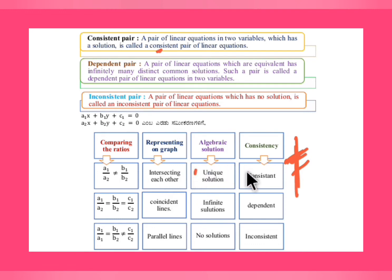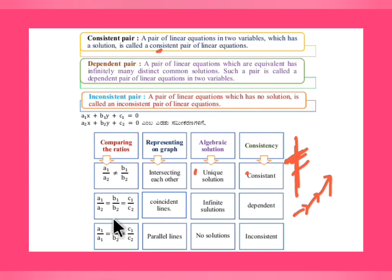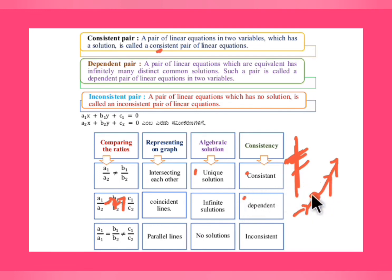They are consistent and have a unique solution. If a1/a2 = b1/b2 = c1/c2, then the lines are coincident — all three ratios are equal in a chain, and they have infinitely many solutions. They are dependent — one is dependent on the other. Use this chain-wise trick to remember the formula.